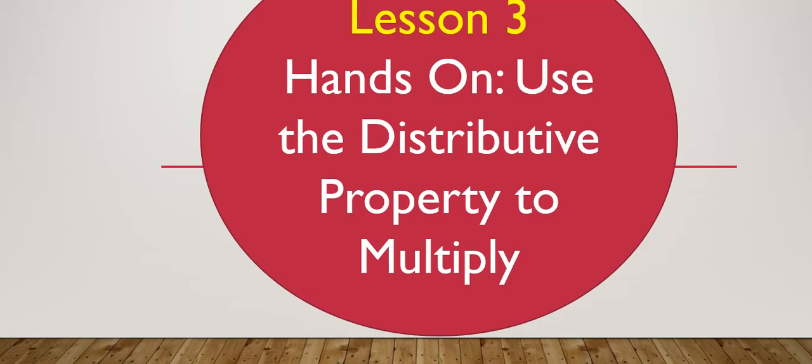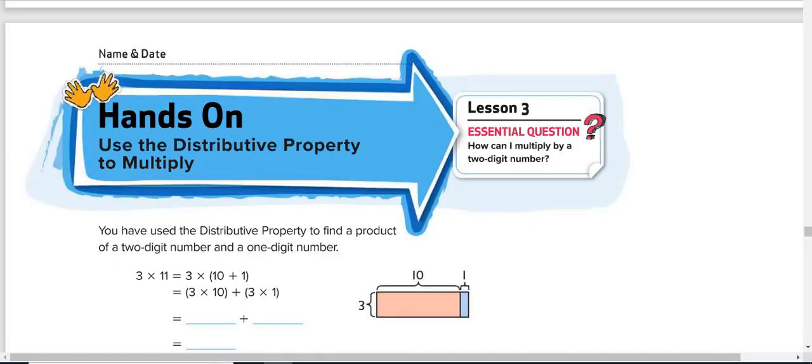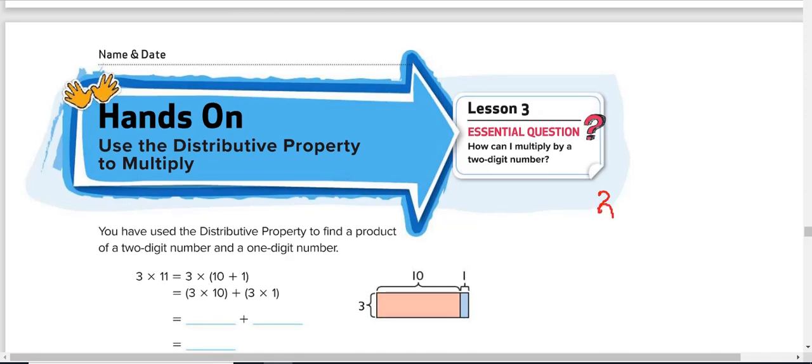Sit back to understand. In our previous lesson, we learned how to use distributive property to multiply numbers. For example, let's say we have a one-digit number, 3, to multiply a two-digit number, 11.